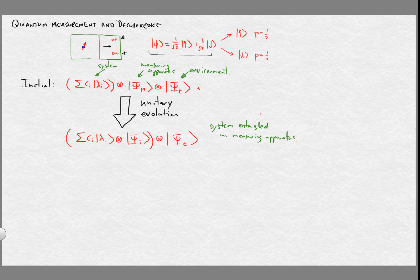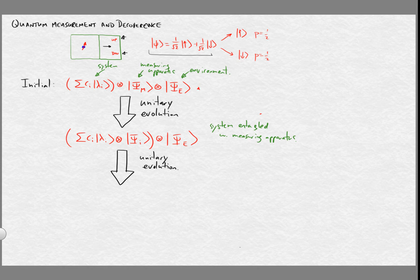So far there's nothing about probabilities or ensembles. But now we can imagine that this entire system continues evolving and interacting with the environment through some further unitary evolution. Eventually we expect the system and the measuring apparatus to be entangled with the environment, and we can call that final state |ψ⟩ of the system, measuring device, and environment.